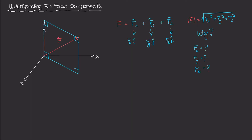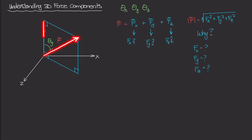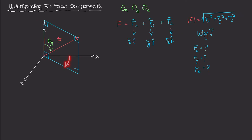We've been talking about direction angles. Within this plane, this angle right here is theta Y. As a quick review: theta X, theta Y, and theta Z are special angles measured from their respective positive axes to the positive line of action of the force. So theta Y is from the positive Y-axis to the force. Similarly, theta X is this angle here, and theta Z is this angle here. I'll call the angle of the plane from the X-axis phi.